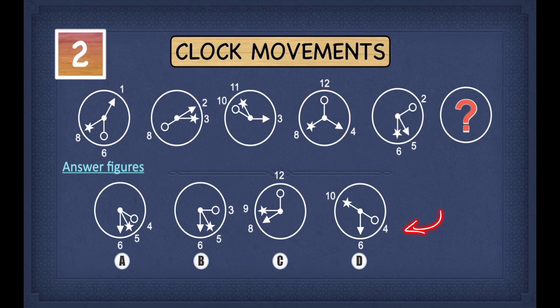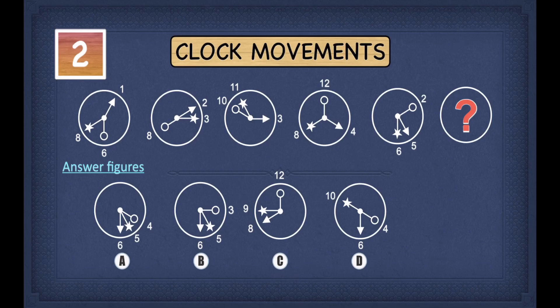Now let's look at the answer figures and check where the arrow points. If the arrow does not point to 6, we cross that option off. In A, the arrow points towards 6, so A is fine. In B, the arrow also points towards 6, so B is fine. In C, the arrow points towards 8, not 6, so we cross C out. In D, the arrow also points towards 6, so D is fine.